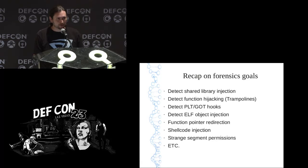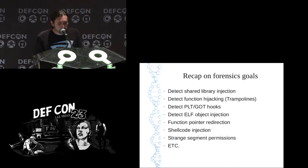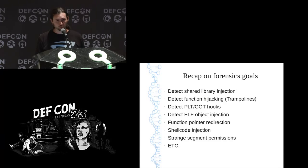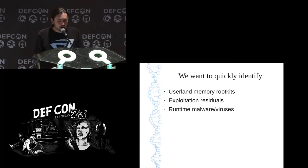A quick recap on the forensics goals: we want to detect shared library injection, any type of control flow hijacking through PLT GOT hooks, any type of injected ELF file — whether an object file, shared library, executable, PI injection, or shell code inserted into the process. We also want to detect strange segment permissions such as a writable code segment or an executable data segment to defeat DEP. Ultimately we're looking for user land memory rootkits, exploitation residuals, and runtime malware or memory resident viruses.